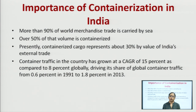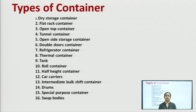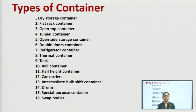Because of the adoption of containerization, the transportation process becomes very smooth and the loading and unloading process also becomes smooth. It not only reduces cost but also improves the overall efficiency of the supply chain. Let us now understand in detail the various types of containers, which include the dry storage container, flat rack container, open top, tunnel, and open side storage container.